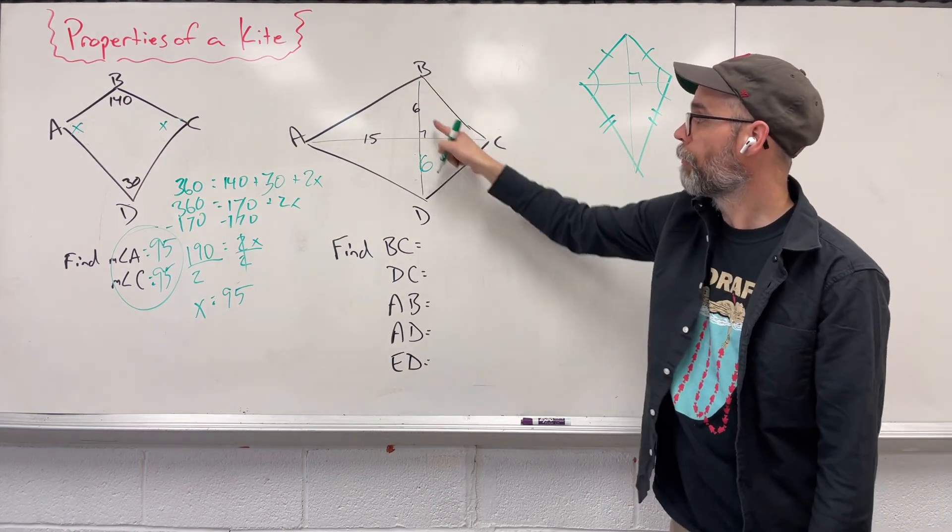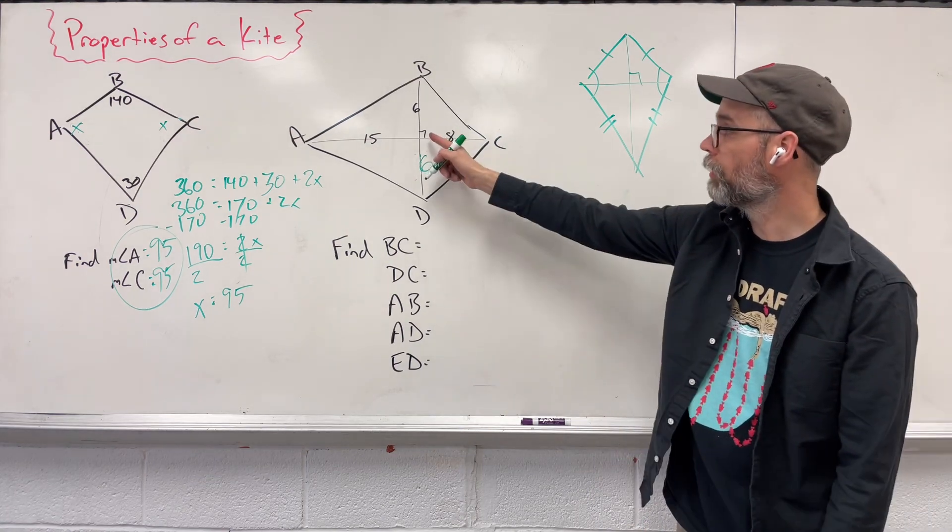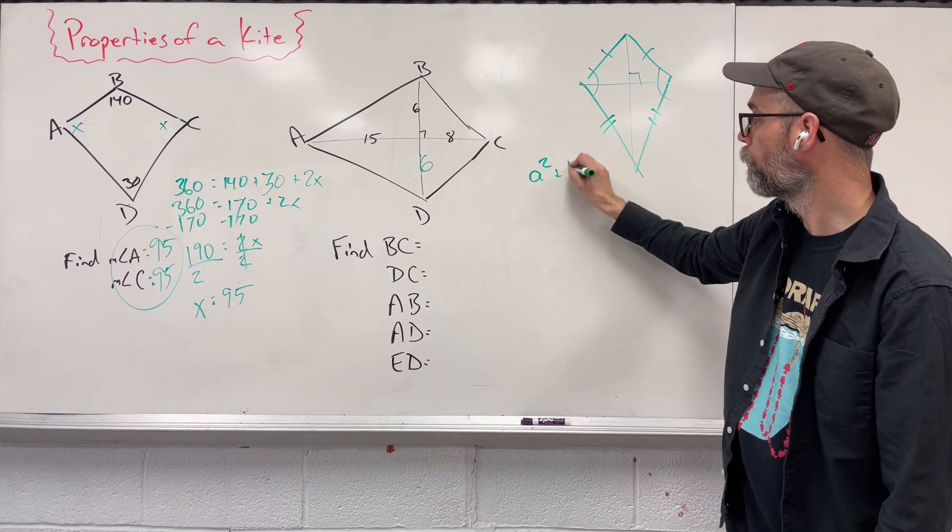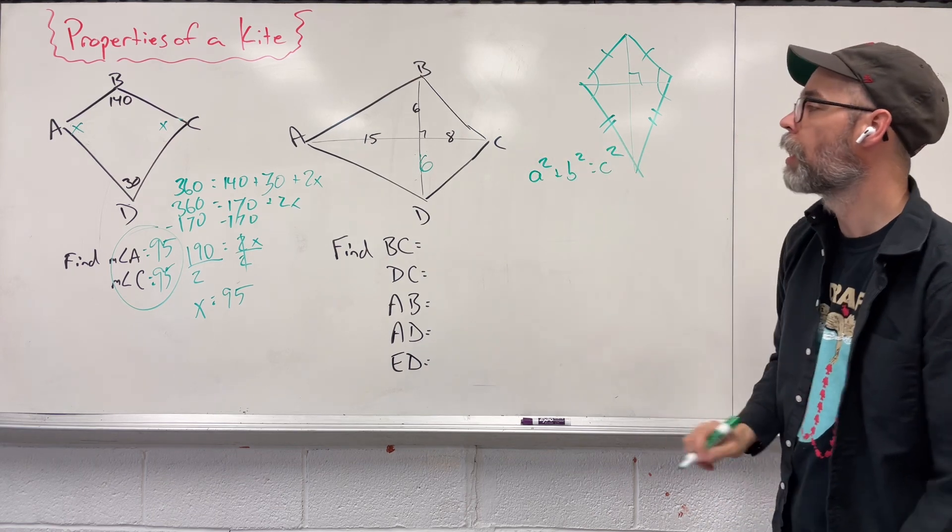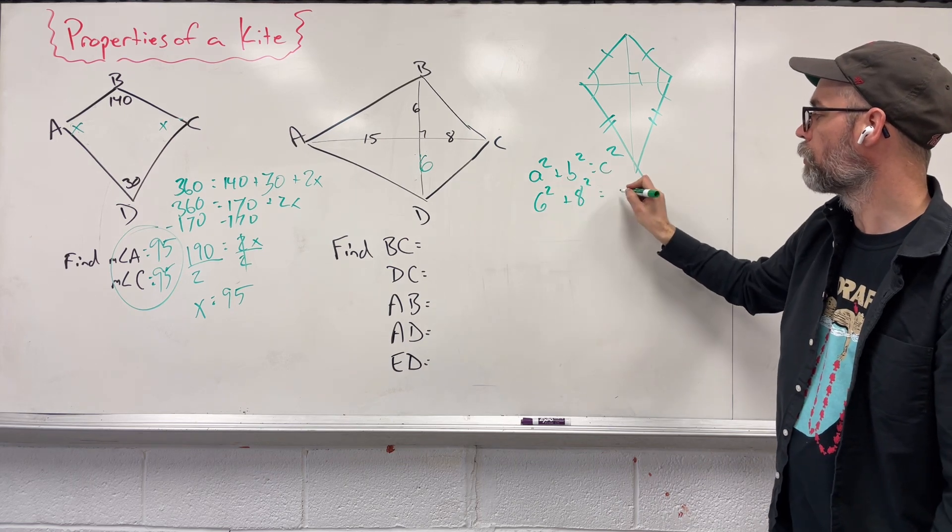If I'm just looking at this top right triangle here, I can use the Pythagorean theorem. We have a right triangle. We have two sides. We can find the missing side. So we could say A squared plus B squared equals C squared. Plug all that in. Six squared plus eight squared equals C squared. We don't know that.